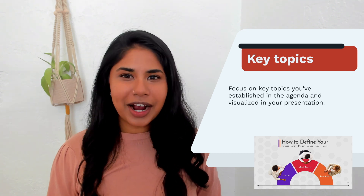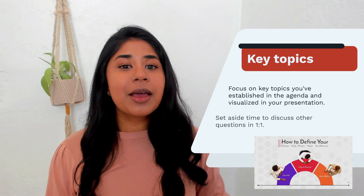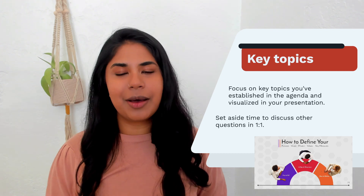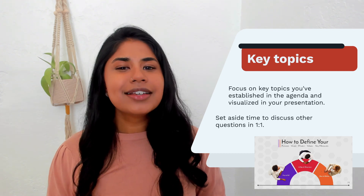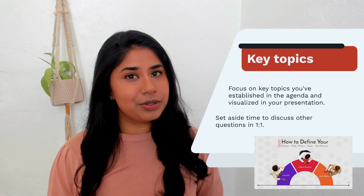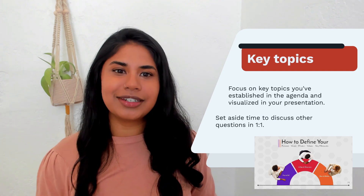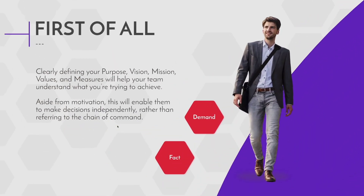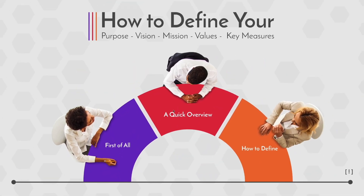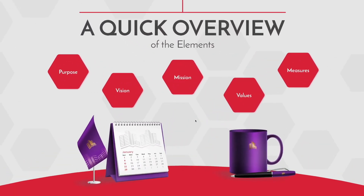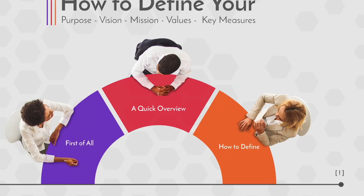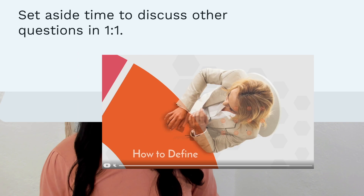And if other matters arise during the meeting, make sure to allocate time to address topics as they come up. Staying on track with key topics can be accomplished by using a visual presentation tool. Here's a Prezi presentation example that's divided into three main sections, allowing for easy zooming in and out to focus on the main theme.